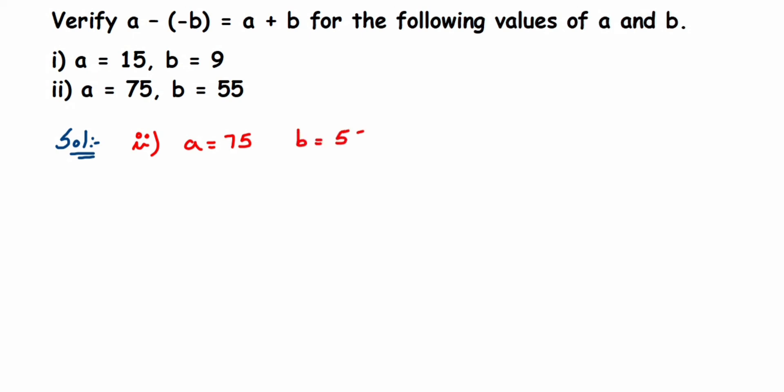We'll check the LHS part first. LHS equals a minus minus b. This equals 75. Like I said before, minus into minus will be plus, so plus 55. Let's add them: we'll get 0 here, then we'll get 130.